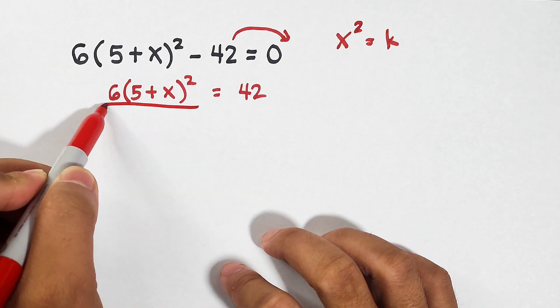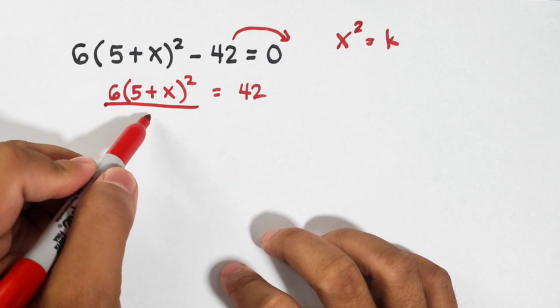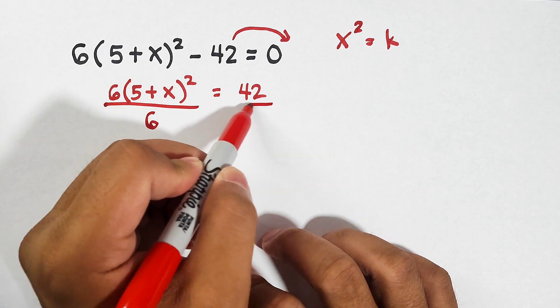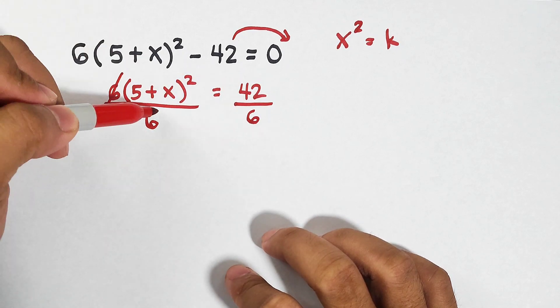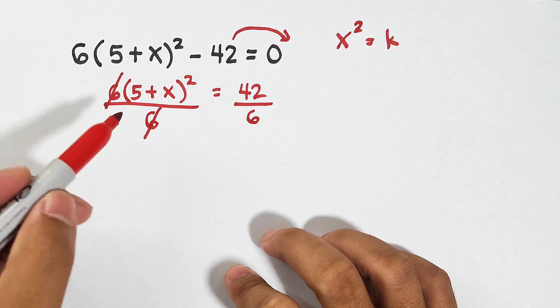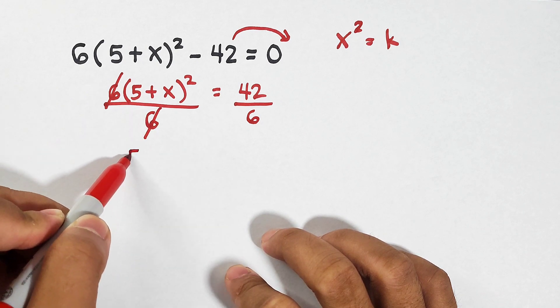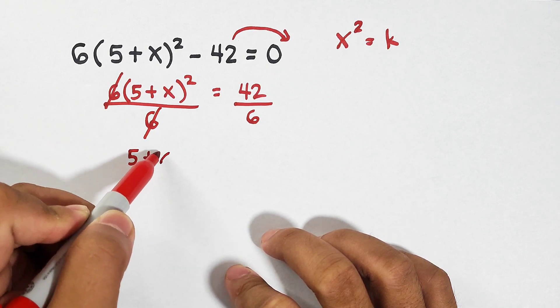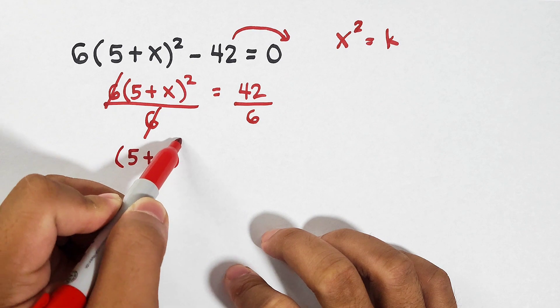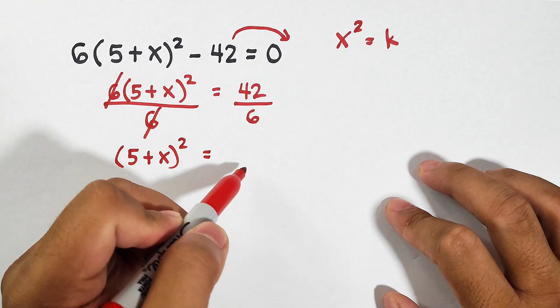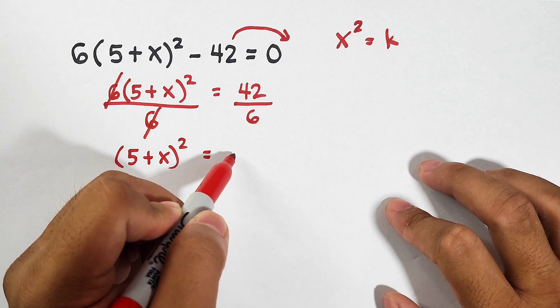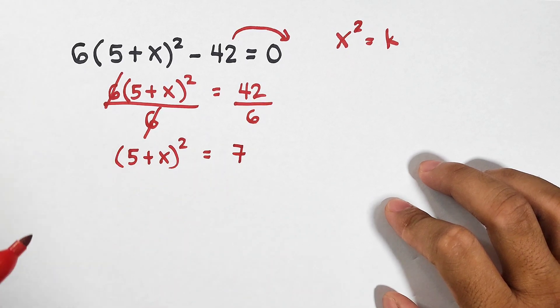To eliminate that, divide both sides by 6. In this case, we can cancel out 6. What remain here is 5 plus x raised to the second power is equal to 42 divided by 6 is equal to 7.